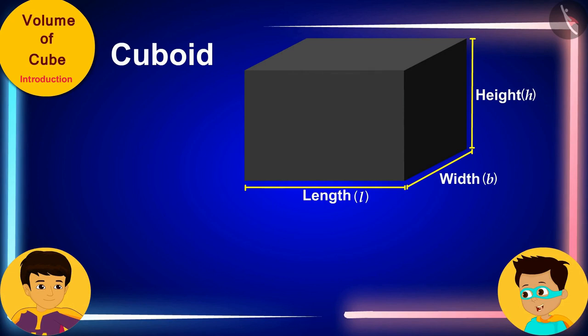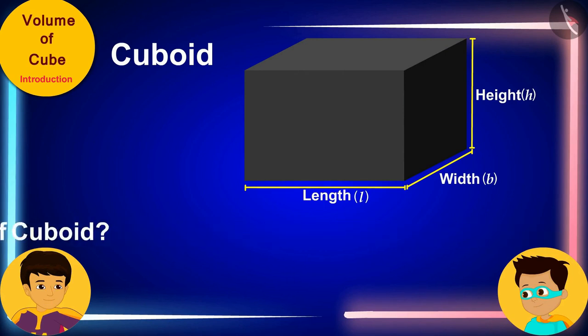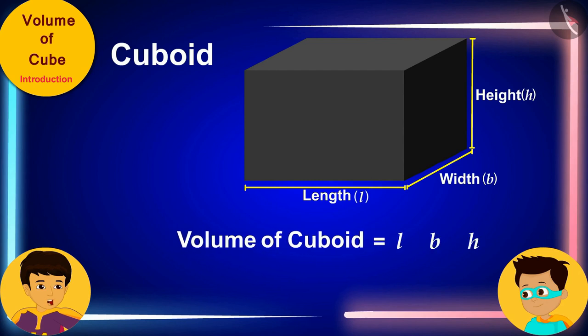Absolutely right! Now, can you tell me the formula for volume of cuboid? I remember this formula very well. The volume of the cuboid is equal to the product of L, B and H, where L, B and H are the length, width and height of the cuboid respectively.